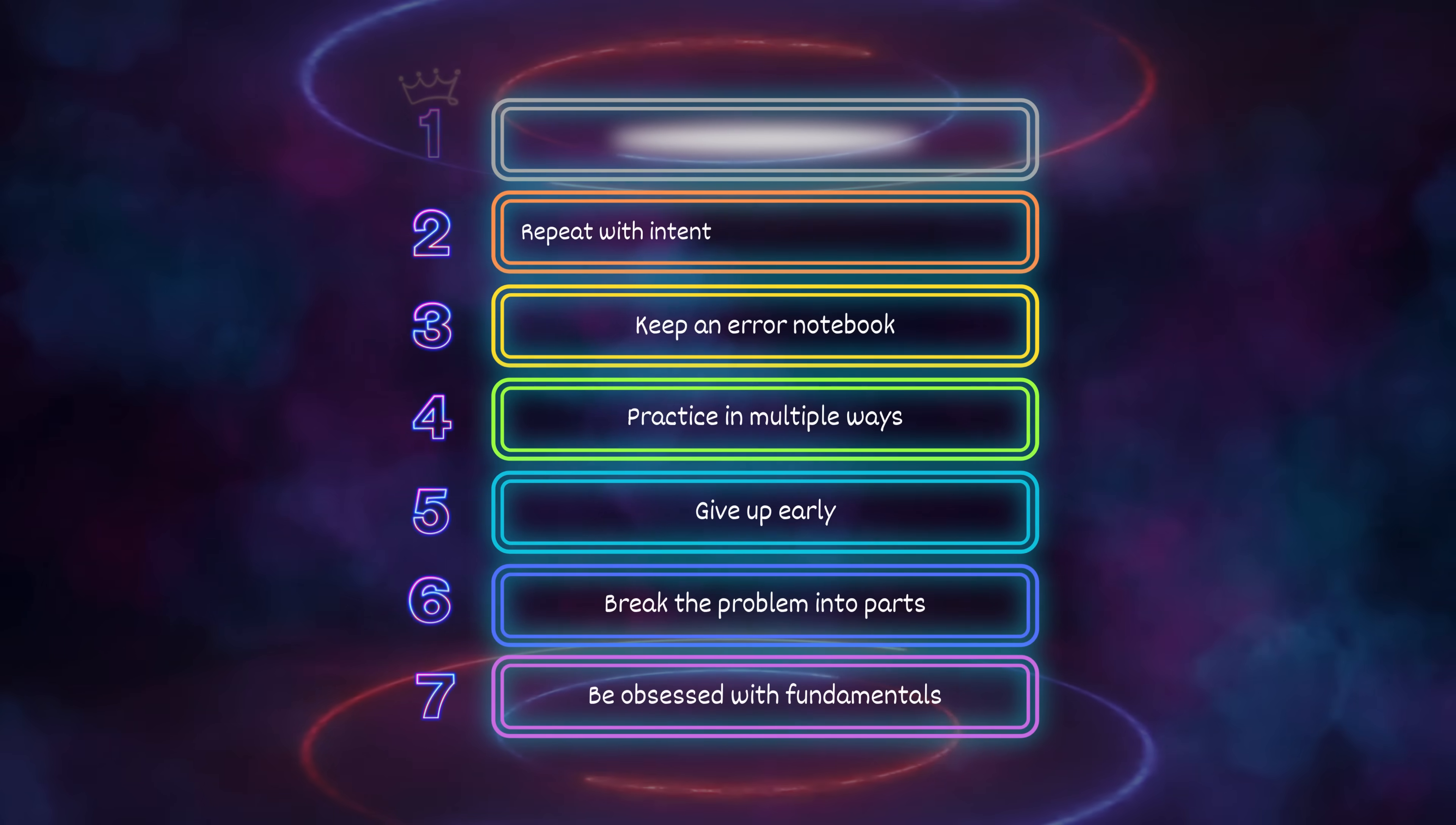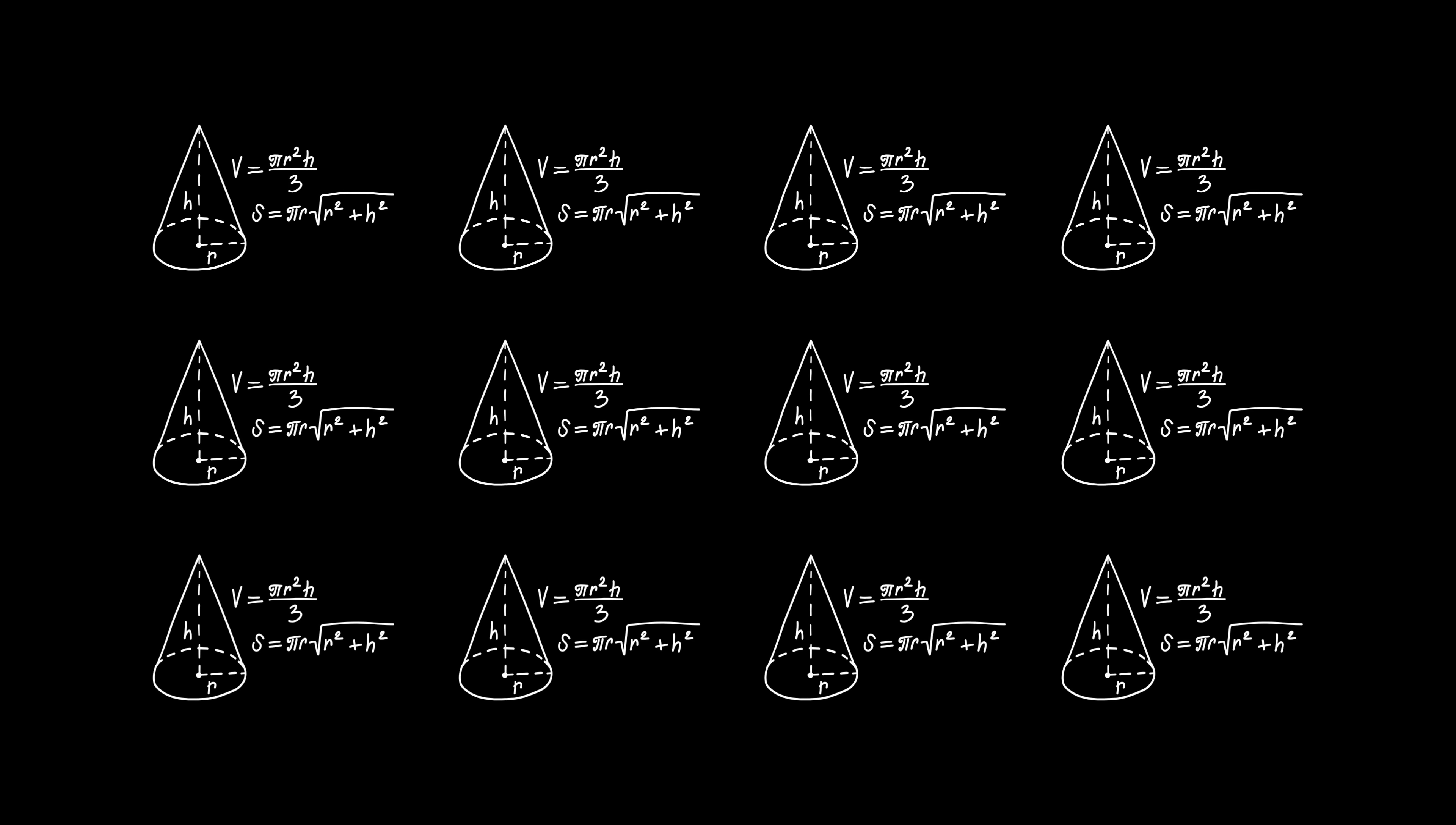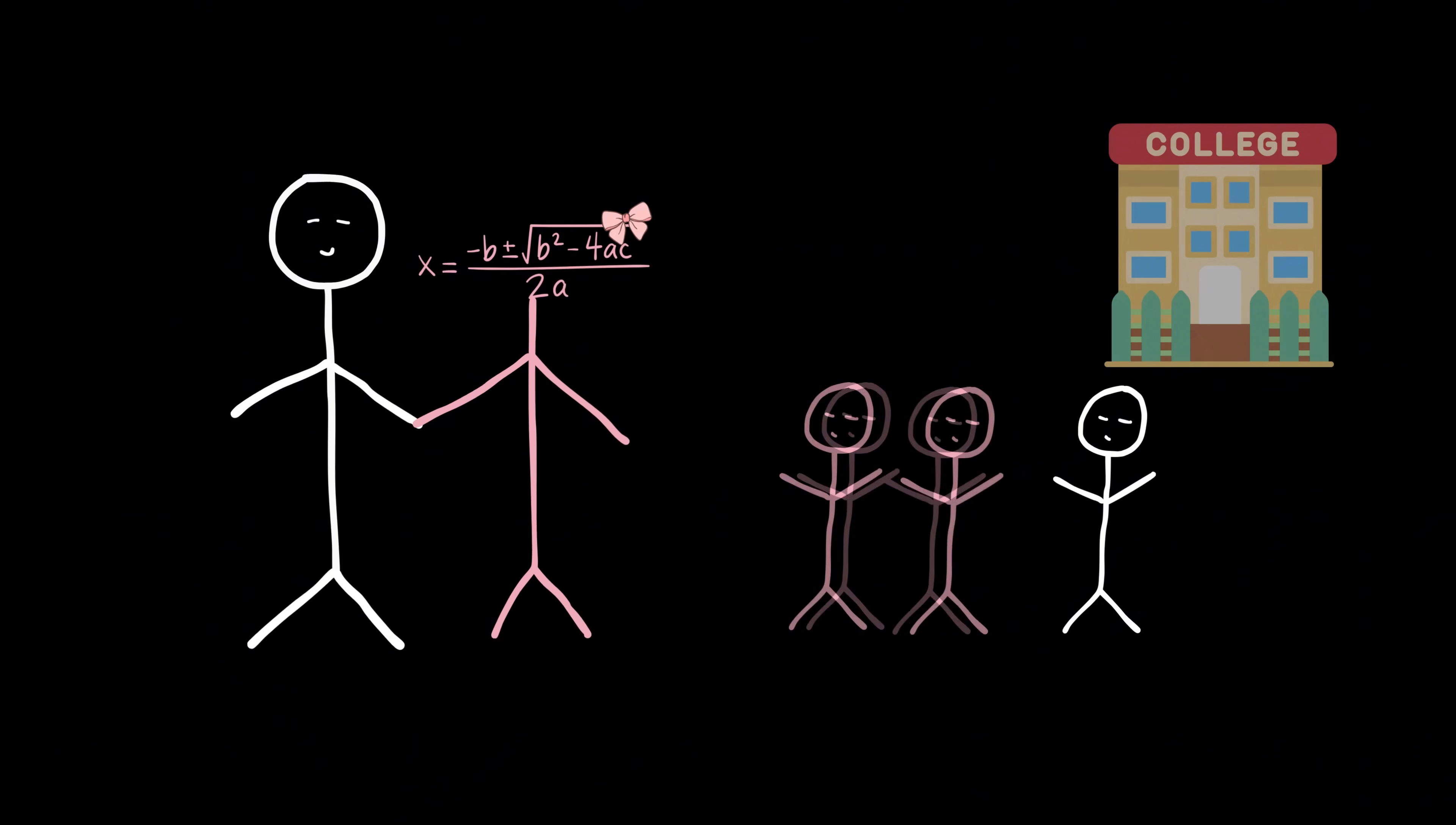Number 2: Repeat with intention and practice under pressure. Asian students understand where that formula came from, why it works, and how to weaponize it like a sniper rifle. And then they drill it so many times they could write it backwards in their sleep while juggling flaming calculators. You're out here barely remembering the quadratic formula, and they've already married it, had three kids, and sent it to college.